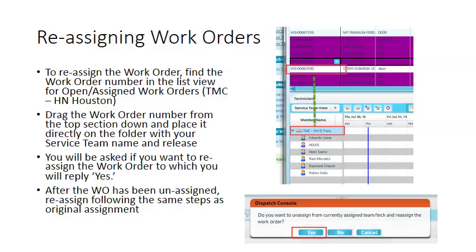If you incorrectly assign a work order to the wrong technician, you cannot drag the work order box on the calendar to a different technician. The work order first must be assigned back to the service team and then can be assigned to a new technician. To reassign the work order, find the work order number in the list view for open assigned work orders. Drag the work order number from the top section down and place it directly on the folder with your service name. You will be asked if you want to reassign the work order, to which you will reply Yes. After the work order has been unassigned, reassign following the same steps as the original assignment.